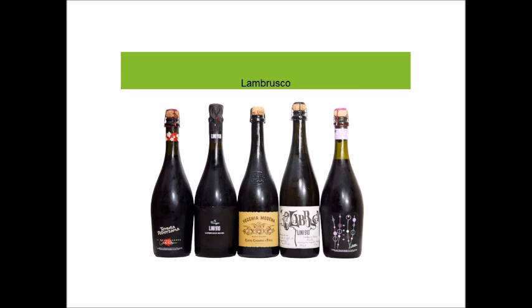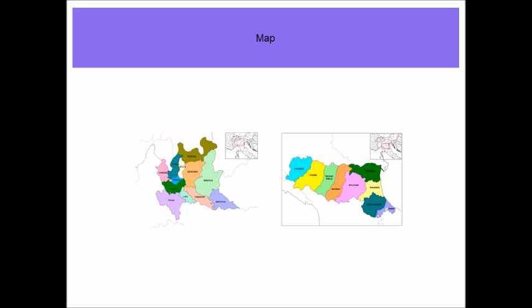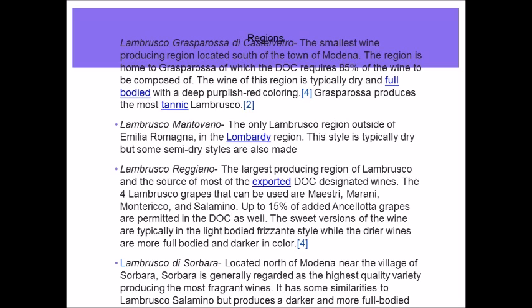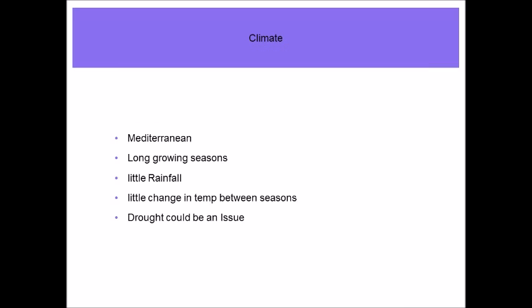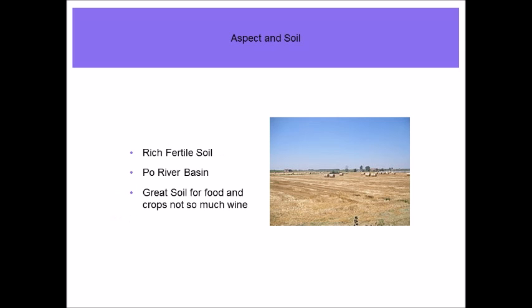Climate of Veneto varies by region: colder continental, warmer river valleys and bodies of water — moderate for full-bodied reds. Aspect: the best vineyards are on hills east of Lake Garda. Soils: rocky and alluvial. Viticulture: modern wine practices; overproduction is a problem.